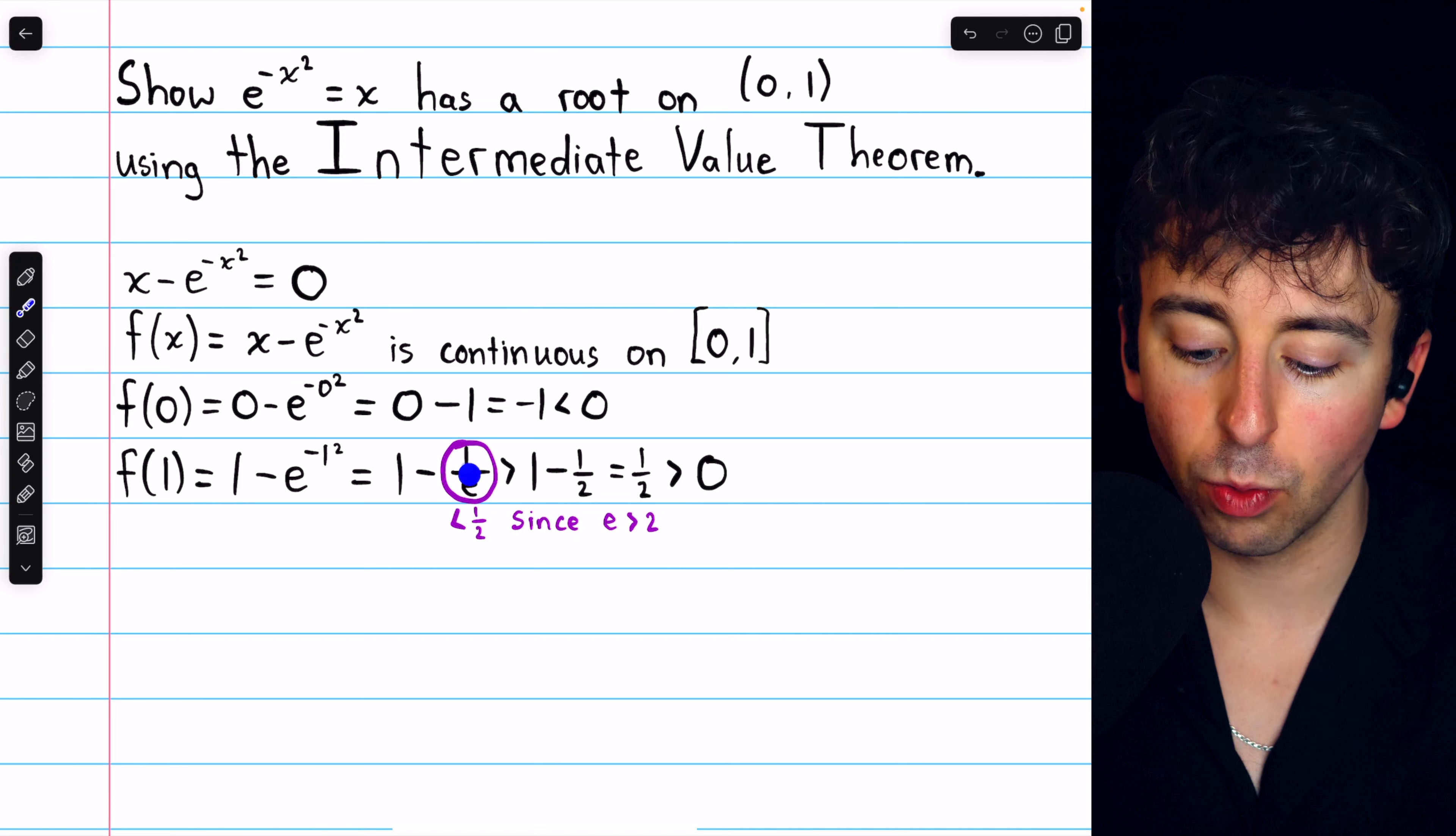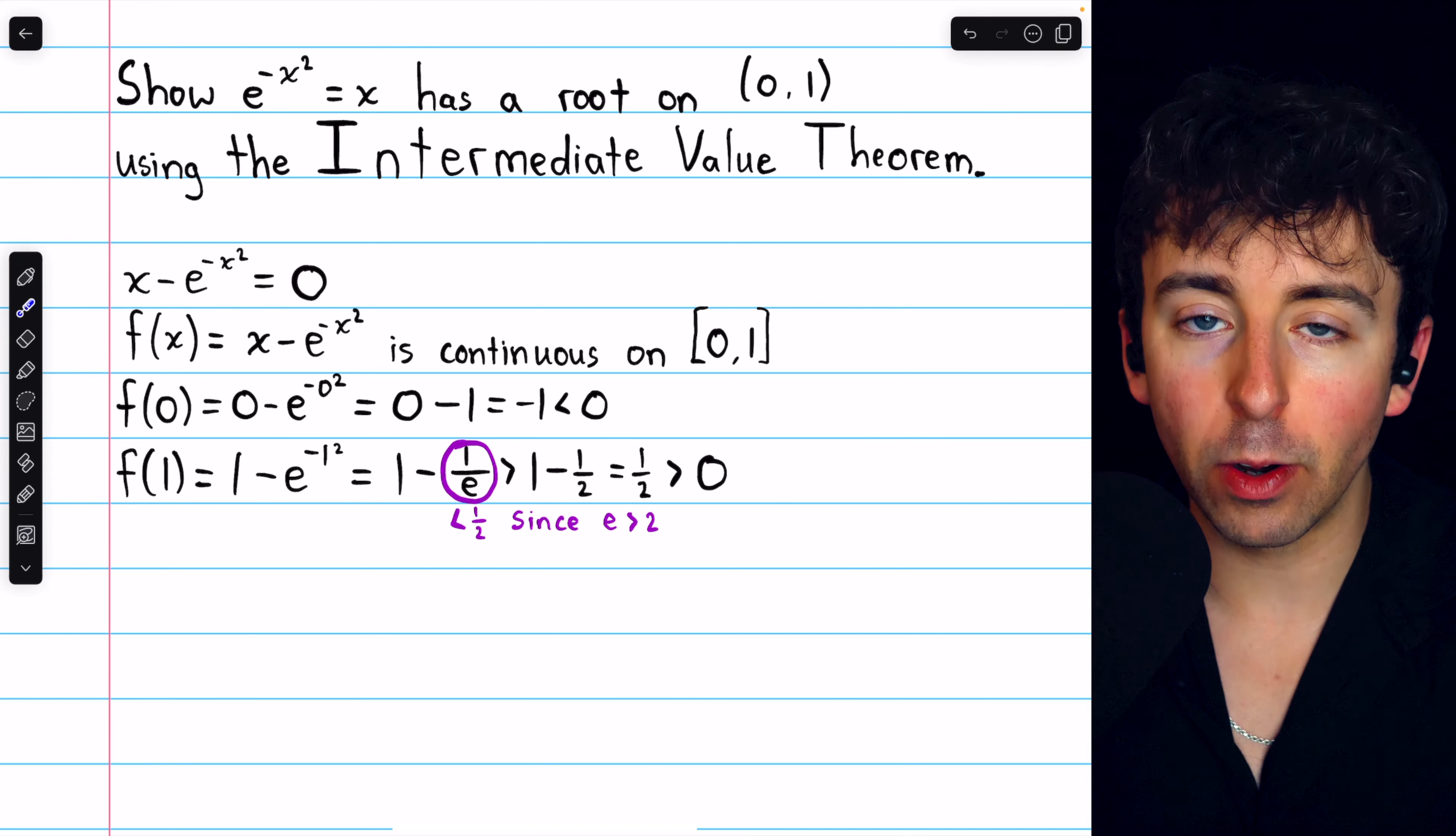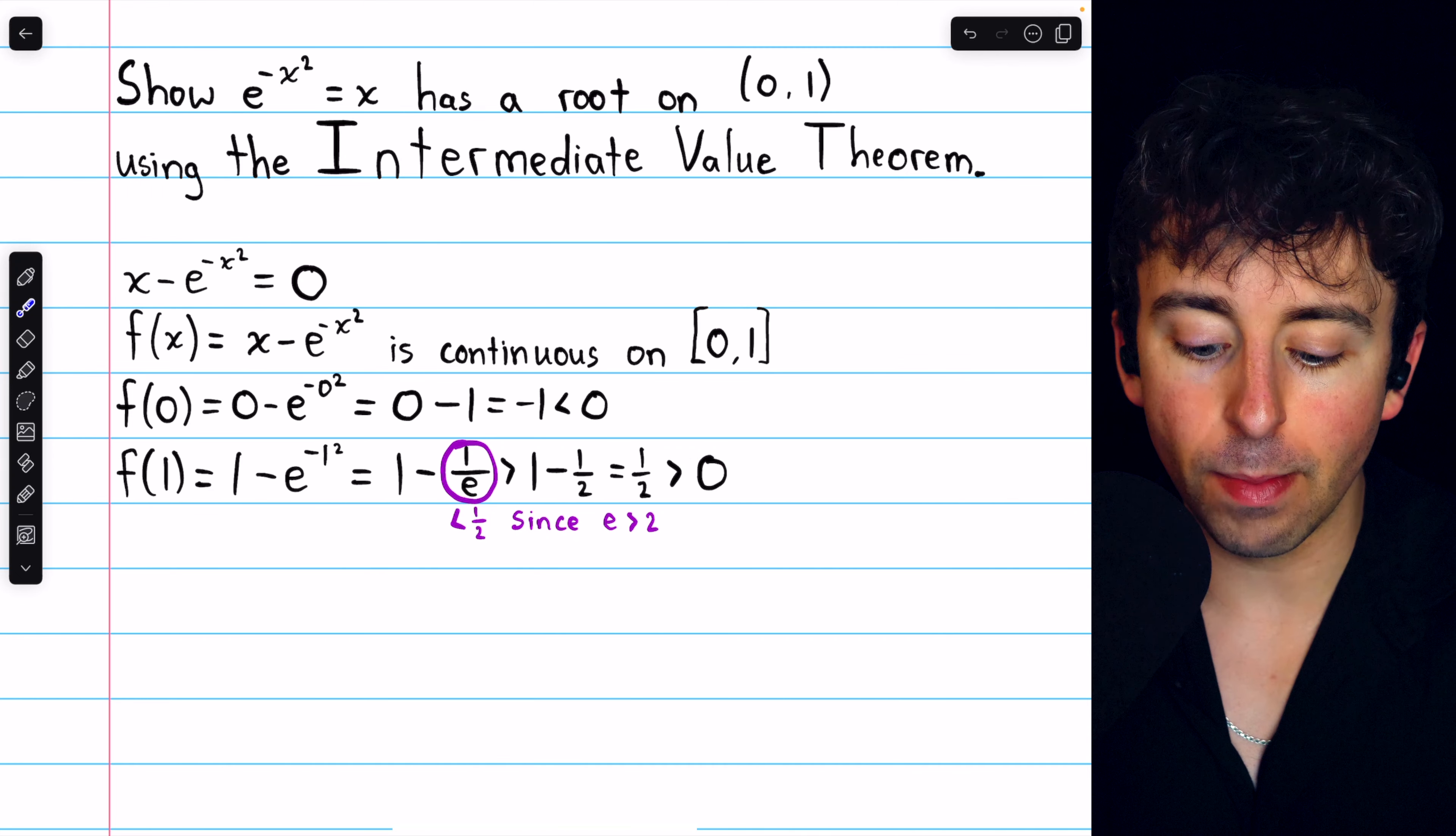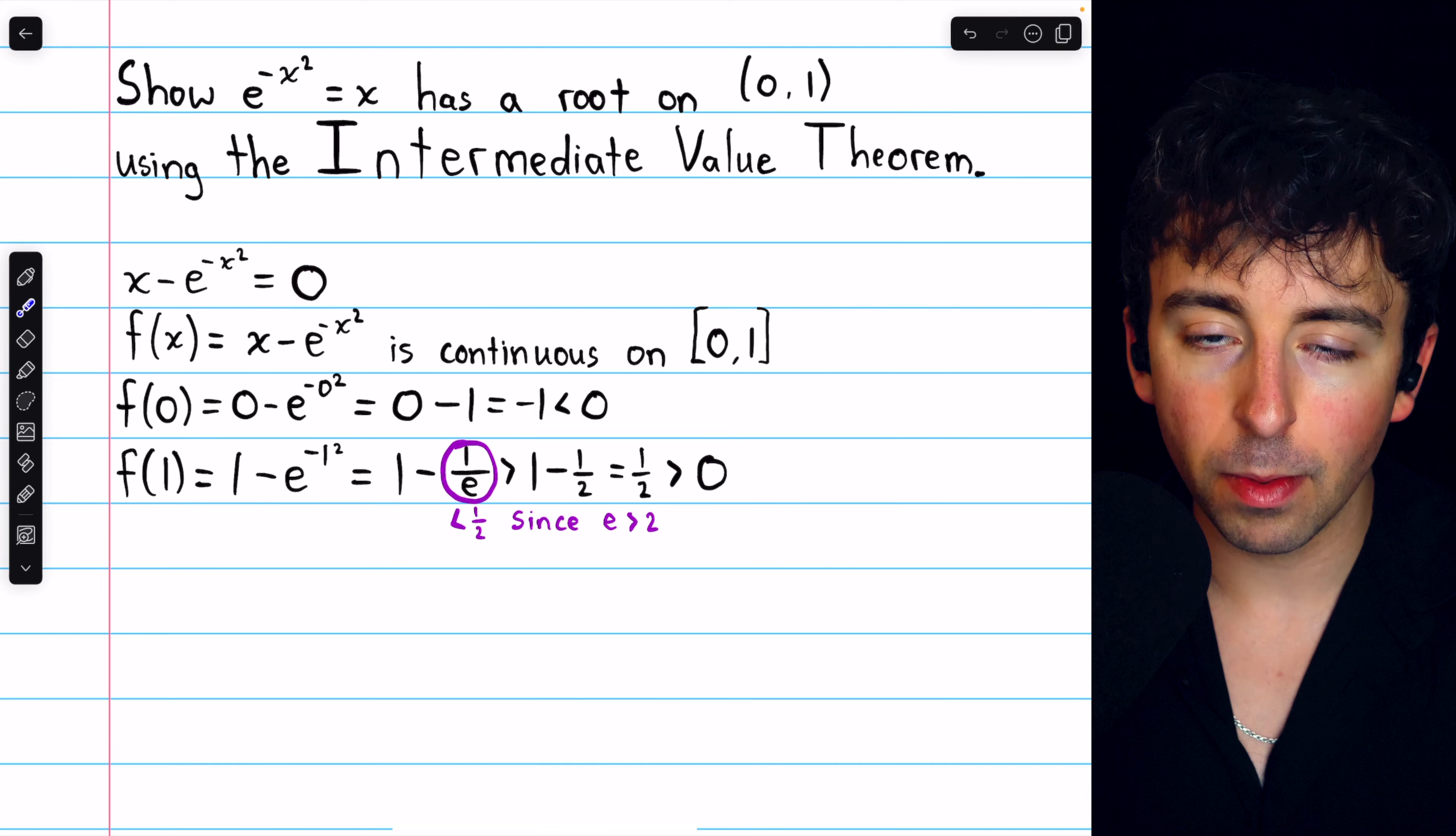Hence, 1 minus 1 over e, which is f of 1, is positive. It's greater than 0. So our function began negative but it ended, at the end of this interval, positive.